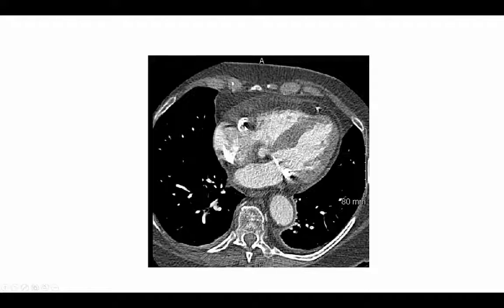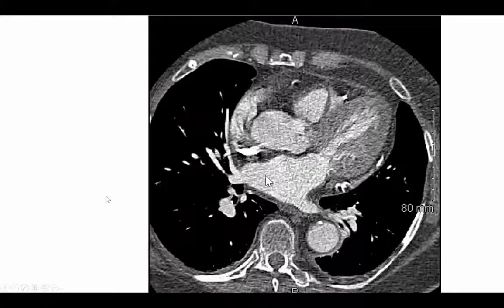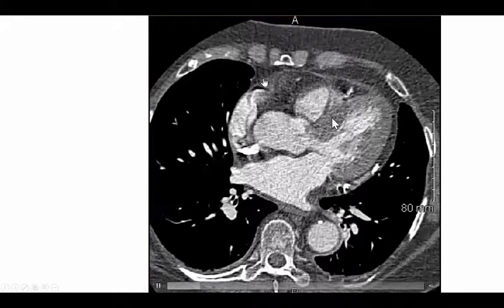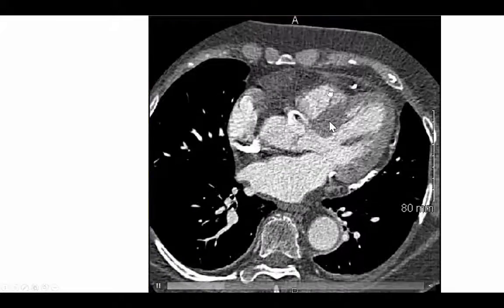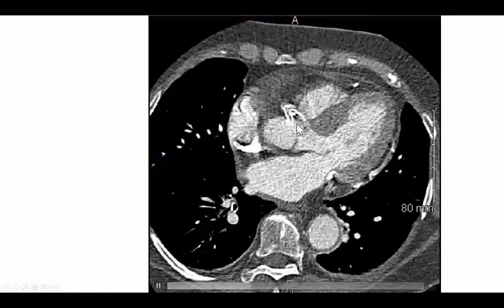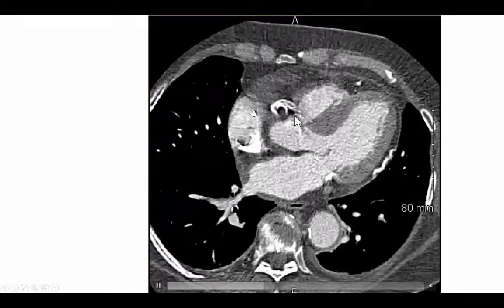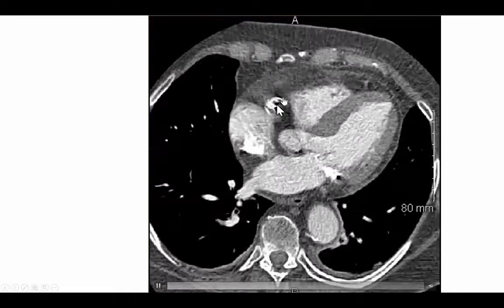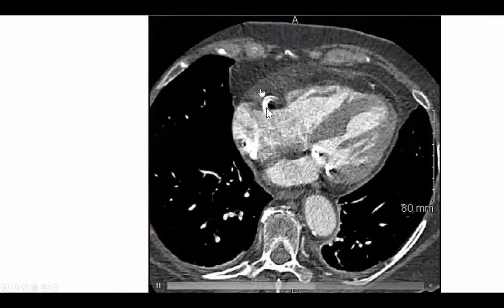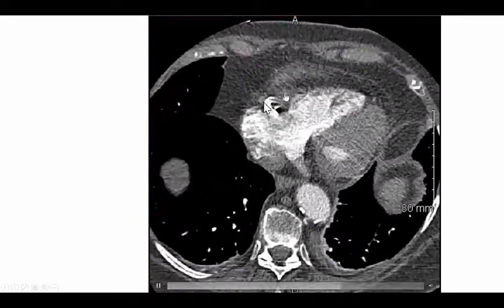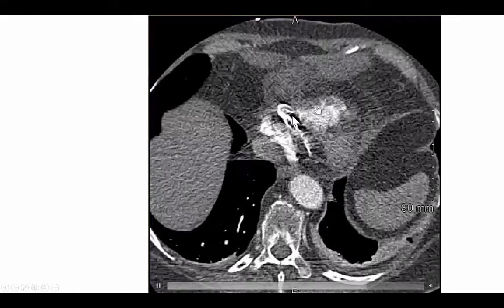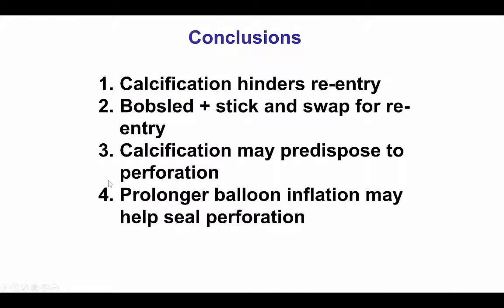This was the CT done after the procedure, showing a small pericardial effusion on the RV side with a heavily calcified right coronary artery. The patient had an uneventful recovery. We did not perform pericardial drainage because the effusion appeared to be loculated and did not cause any compression of the right ventricle.